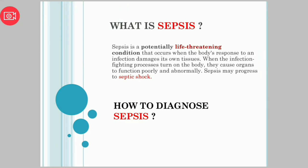What is sepsis? As we are going to find out the SOFA score, firstly we need to know what sepsis is. Sepsis is a potentially life-threatening condition that occurs when the body's response to an infection damages its own tissues. When the infection-fighting process turns on the body, it causes organs to function poorly and abnormally. Sepsis may progress to septic shock.